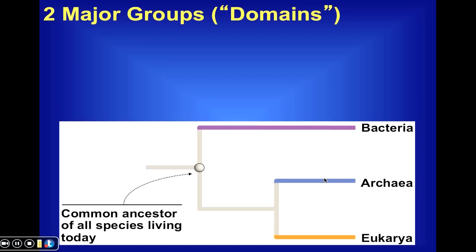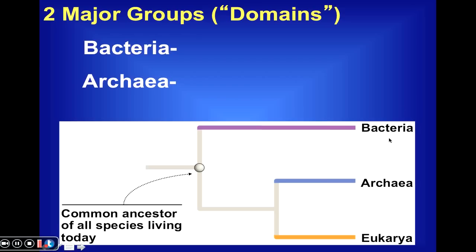Of all the many species of prokaryotes that exist, we recognize essentially two different groups, or two different domains: those prokaryotes referred to as simply bacteria, or eubacteria, and those referred to as archaeibacteria, or archaea. They resemble one another in many ways, but there are enough molecular differences between these two groups to warrant their inclusion in two separate domains. All other organisms are included in the domain Eukarya, which includes all eukaryotes — protists, plants, animals, and fungi.